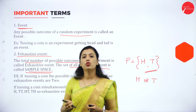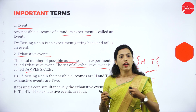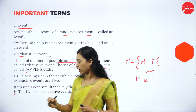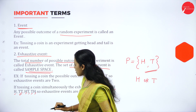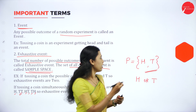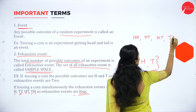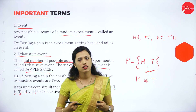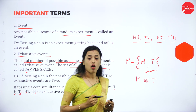If we toss two coins simultaneously, we will get head in the first coin and head in the second coin, or tail in the first coin and tail in the second coin, or head in the first and tail in the second, or tail in the first and head in the second. So the exhaustive events are four: HH, TT, HT, and TH. Exhaustive event means total number of possible outcomes. Here if we toss two coins simultaneously, we will get four possible outcomes.